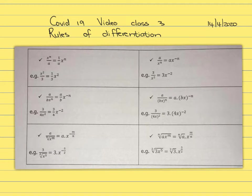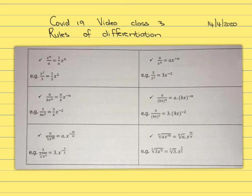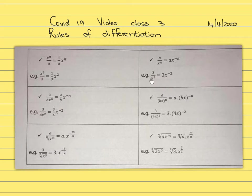Here we've got a over x to the power n. To take this x to the power n to the top and remove the fraction, you bring x to the power n up — the x stays the same, no change in sign, but n changes to the opposite sign. For example, 3 over x squared can be written as 3x to the power minus 2.